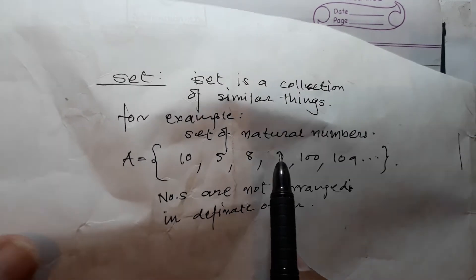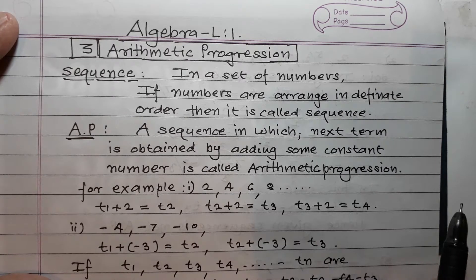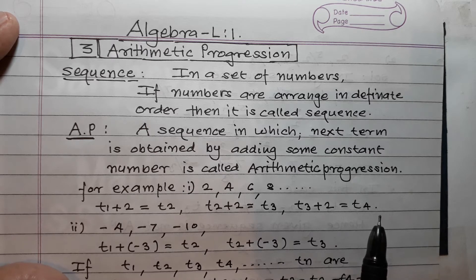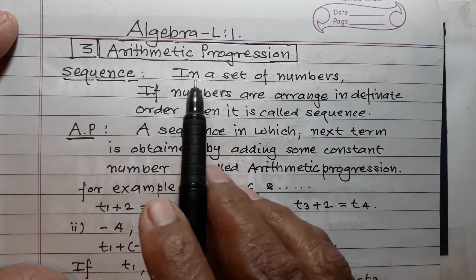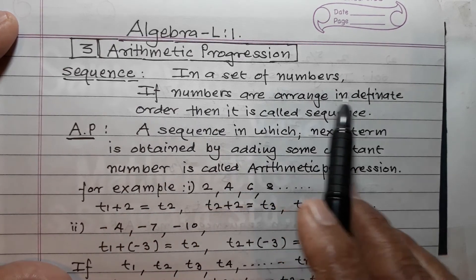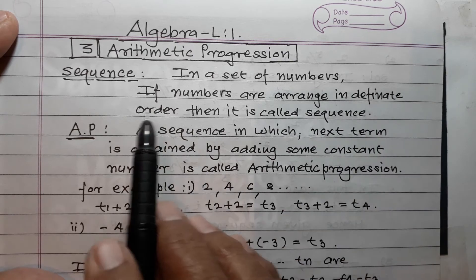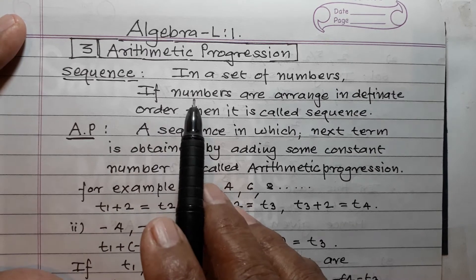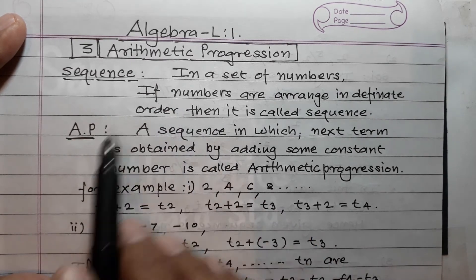Now try to understand what is a sequence. A sequence is also a set — it is also a collection of numbers — but the numbers are arranged in a definite order. So in a sequence, if two consecutive numbers are given, you can find the third number.